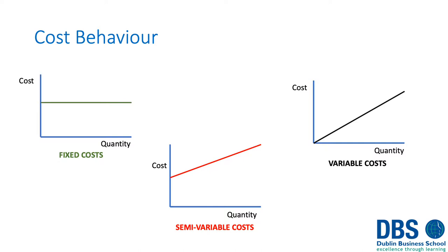The first is a fixed cost — a cost that doesn't change with activity, so it remains the same and appears as a straight line parallel to the axis. The second is a variable cost, which changes directly with activity — if we produce zero we have no cost, then it goes up in direct proportion to quantity. The third is a semi-variable cost, which has a fixed element no matter what we do, so the line doesn't intersect at zero, but then increases directly in line with activity.